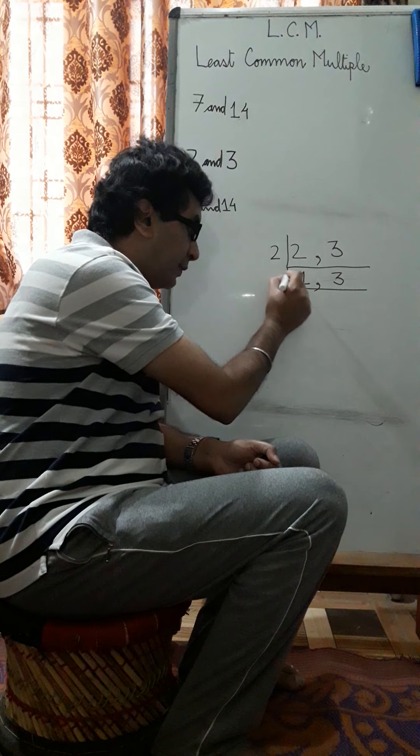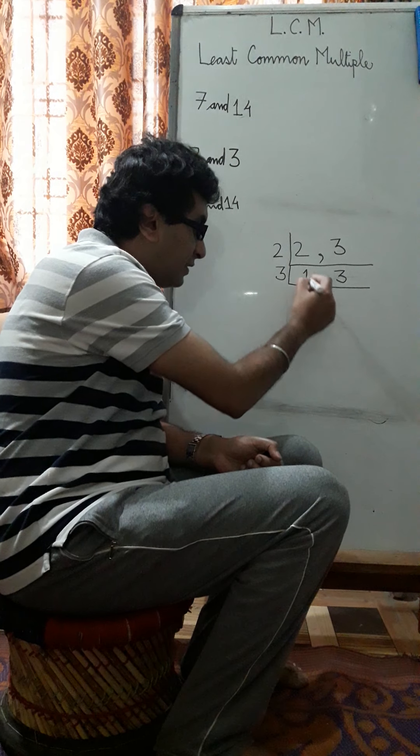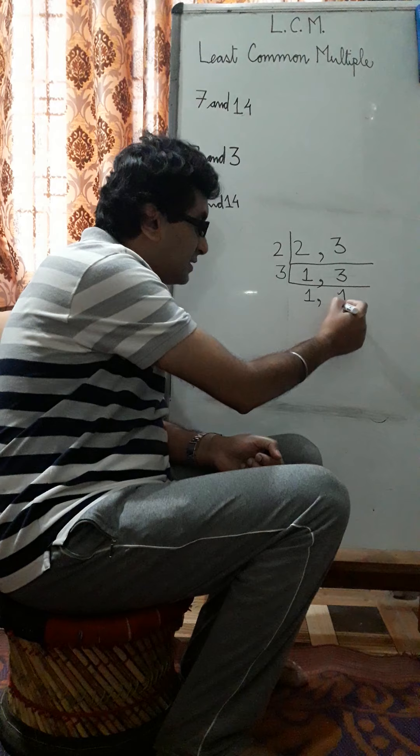So can 2 divide 3? No. But 3 can divide? Yes. So 3, this 1 will come down like this and 3 ones are 3.